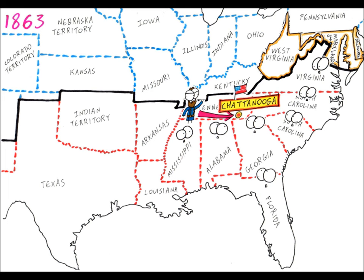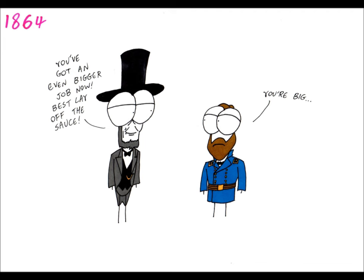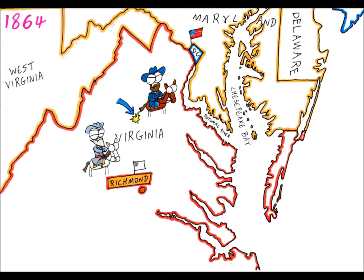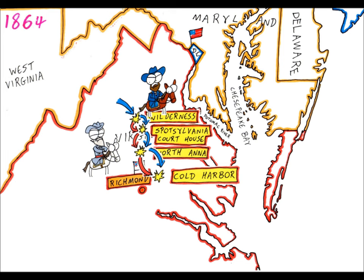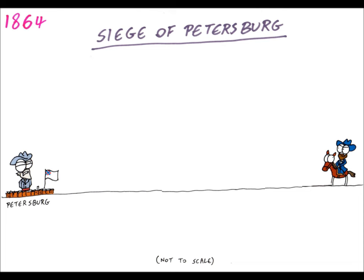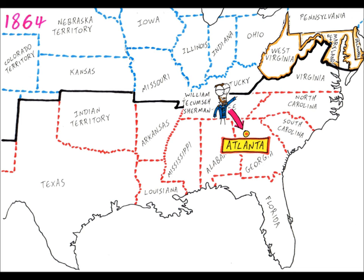Grant relieved besieged Union forces at Chattanooga, pushing Confederacy forces out of Tennessee, leaving Union forces looking at the heartland of the Confederacy. With the start of 1864, Grant was made commander of all Union armies by Lincoln. They decided upon a huge coordinated campaign, pushing into the Confederacy from all directions. Grant pushed his forces down through Virginia towards the Confederacy capital Richmond, fighting Lee's army along the way, both sides suffering heavily. It was a war of attrition. Despite setbacks for the Union, Grant pushed on, driving Lee to Richmond and close by Petersburg. Lee moved to defend Petersburg as it was the railway supply line for the capital. Grant dug trenches and a ten-month siege ensued.